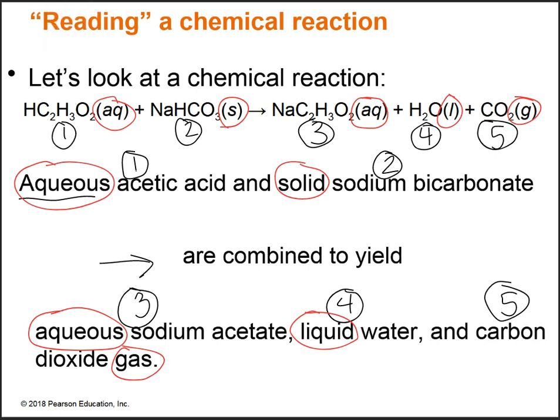Practice naming — it is very important for being able to read a chemical reaction. Eventually you'll be able to look at a chemical equation and read it like a line in a textbook. Make sure you practice; that's the only way to get good at this.